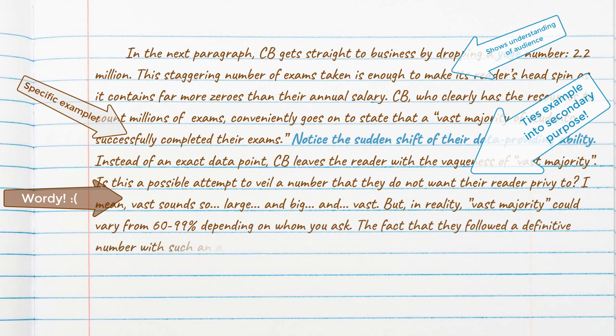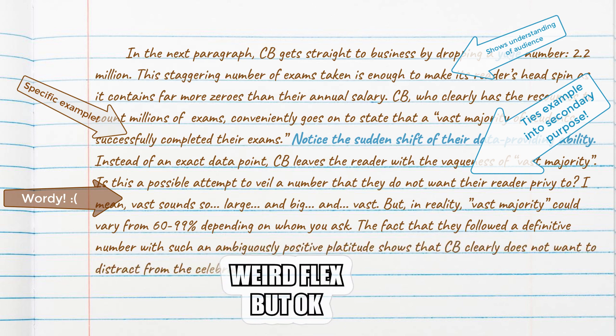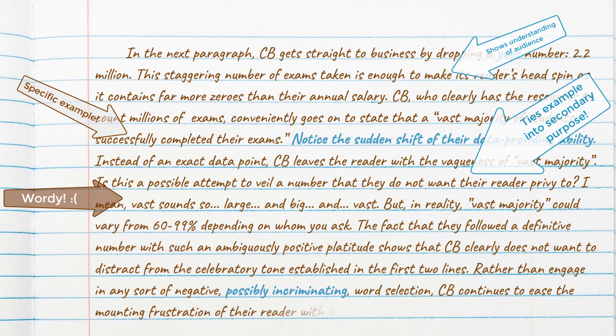The fact that they followed a definitive number with such an ambiguously positive platitude shows that CB clearly does not want to distract from the celebratory tone established in the first two lines. Rather than engage in any sort of negative, possibly incriminating word selection, CB continues to ease the mounting frustration of their reader with aggressively positive, albeit unclear, statements.